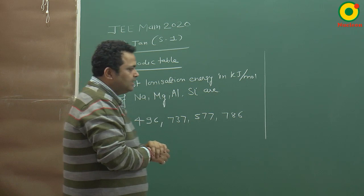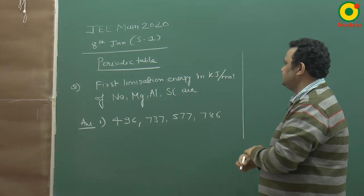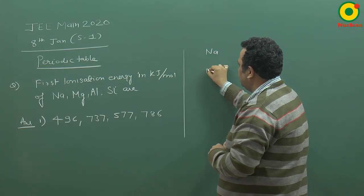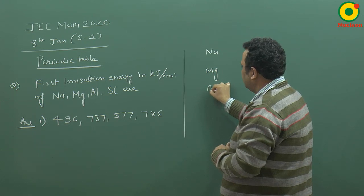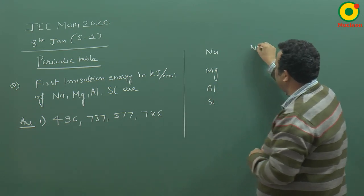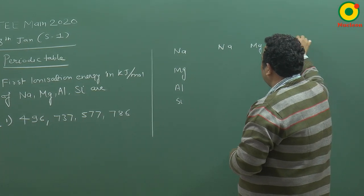We don't remember the value. We have to know which order is first ionization energy. So if I take the elements like sodium, magnesium, aluminium, and silica, we have to collect them in periodic table. Sodium, then magnesium, then aluminium, then silica.